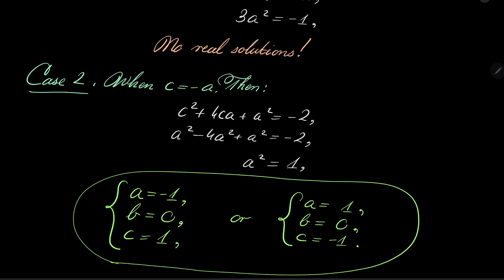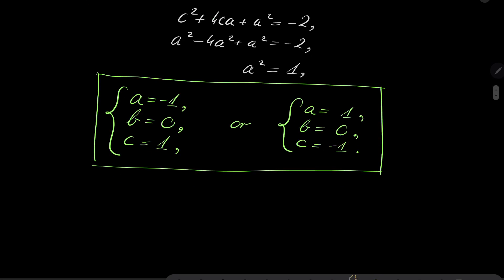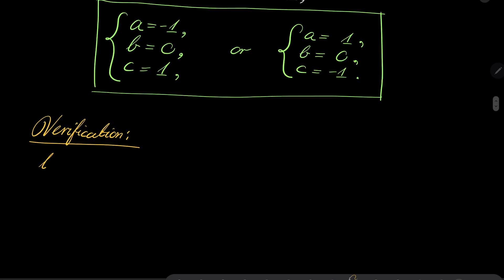But since we have been adding our equations together and subtracting them, to be completely sure, let's do verification in the end. So let's do verification. Verification. So let's evaluate b² + 4bc + c². What is it? Well, b is 0, so it's c². In both cases, c² is 1.